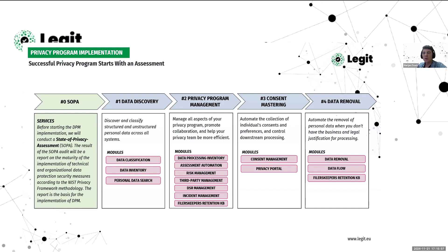That was our light bulb moment. We realized we needed to focus on assessing how well these measures were actually being implemented. Before rolling out our software, we needed to lay down a clear plan — a roadmap — to help customers navigate the implementation process. SOPA isn't just about pointing out what's missing; it's about providing clarity on where to start and what to tackle first, looking beyond paper-based compliance to ensure that fundamental ground-level practices are solid.